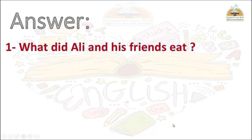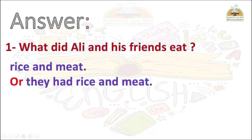يلا بقى نجاوب الأسئلة. Question number one: What did علي and his friends eat? يعني ماذا تناول علي وأصدقائه؟ الإجابة: short answer — rice and meat. Long answer — they had rice and meat.